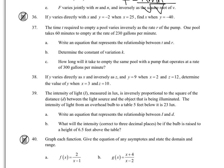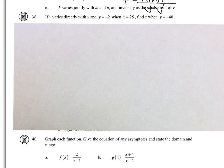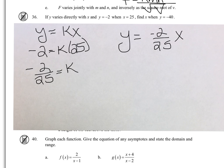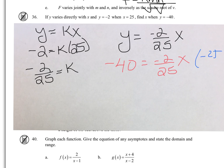So now to solve 36: Y varies directly with X. We're going to plug in the values they give us to find K. So K is negative 2 over 25. Plugging that value into the equation, find X when Y is negative 40. Solving this, we're going to multiply by negative 25 over 2.